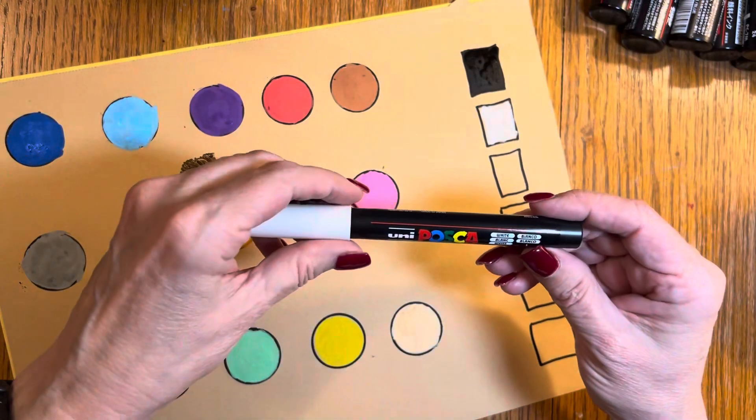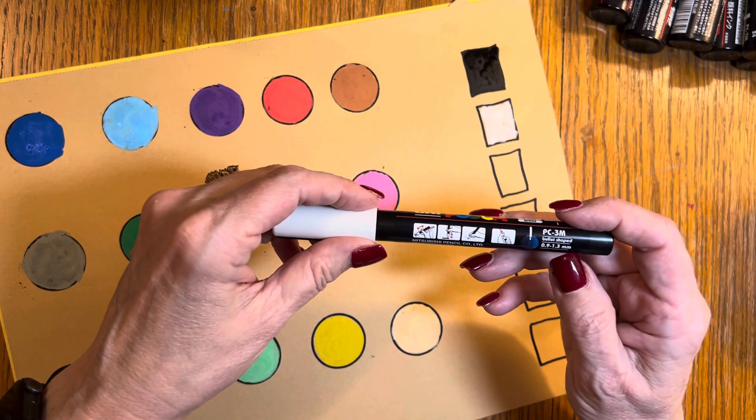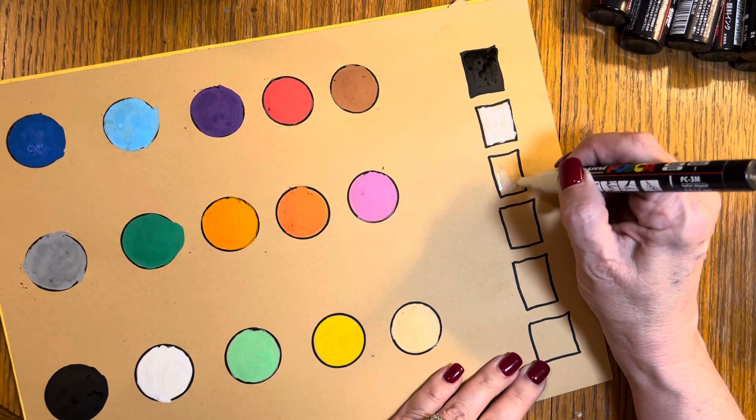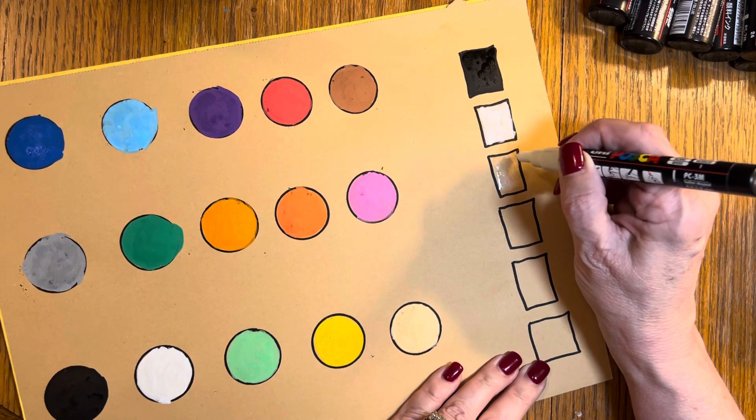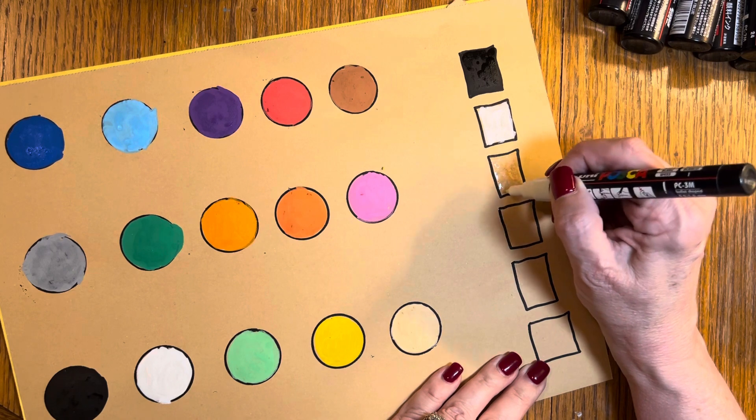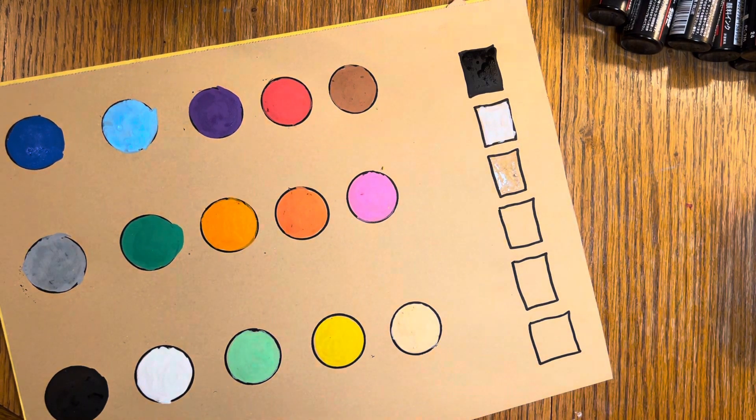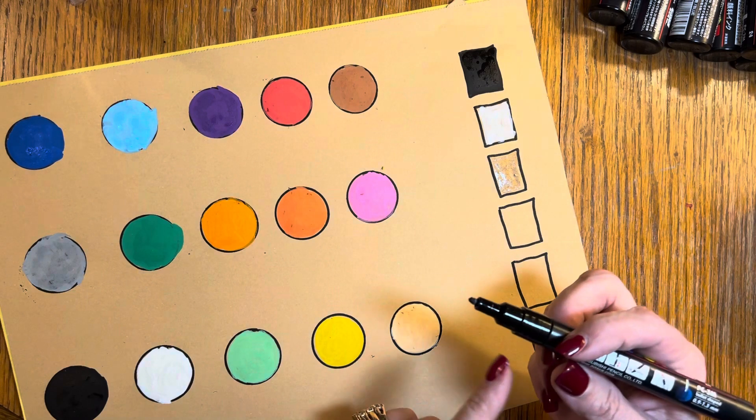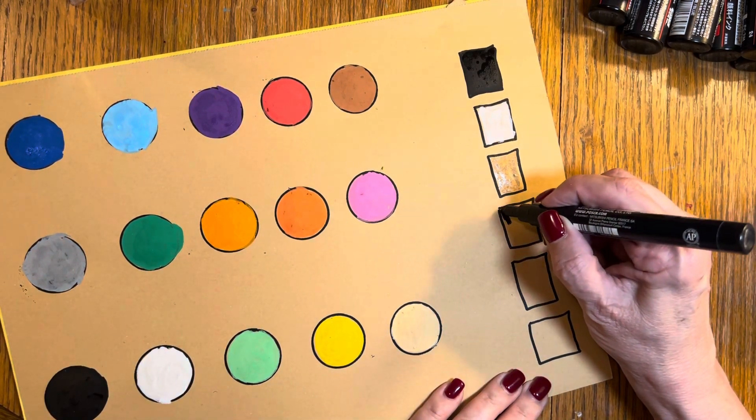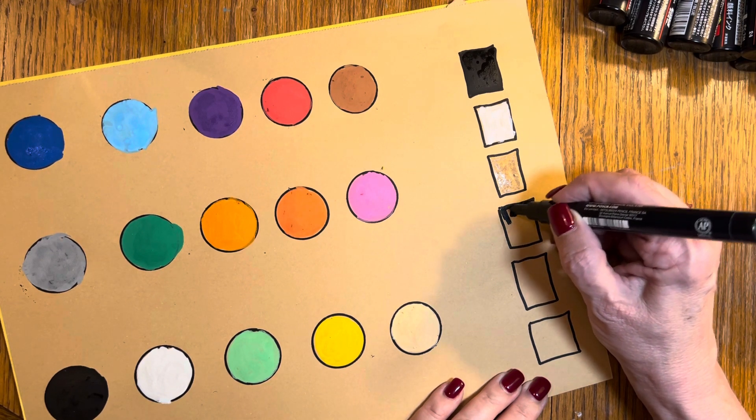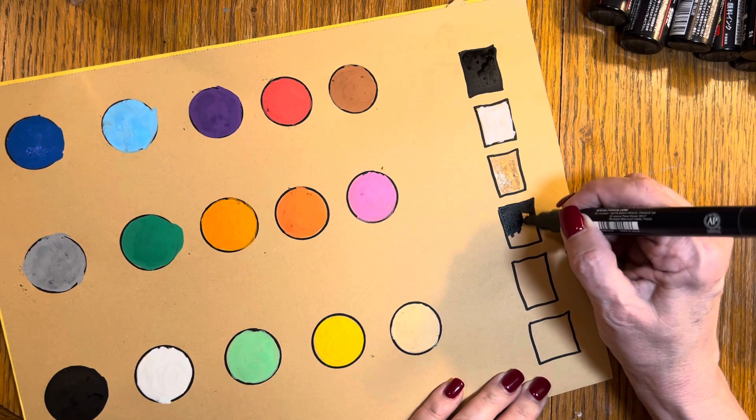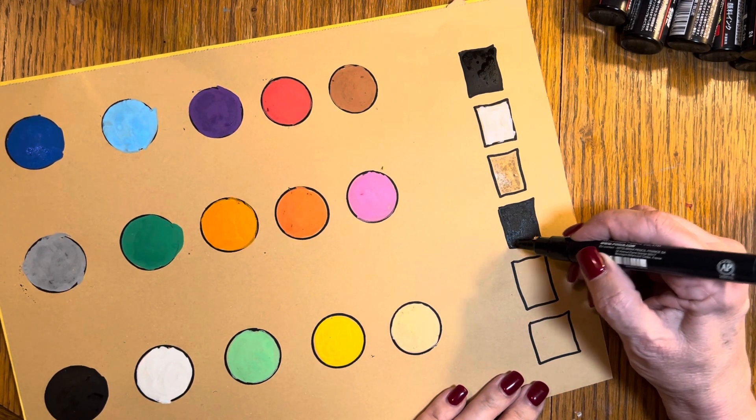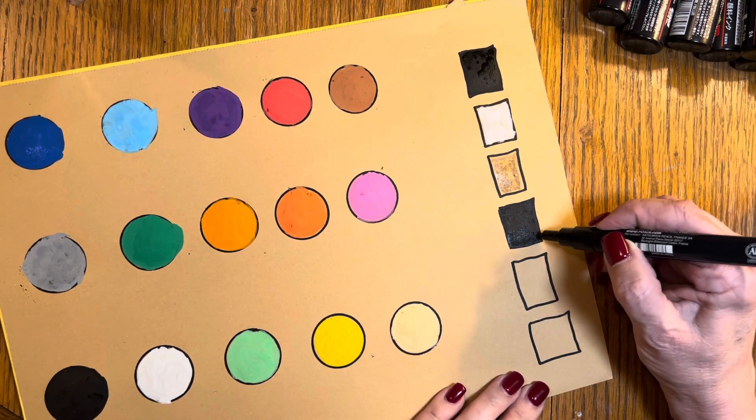And then we have a white one, this is a 1.3 millimeter, a 3 white. White didn't come out quite as good as I'd hoped, I don't know what the deal is with that one. And then we have a black fine bullet tip, see that? It's a 1.3 or a 3 millimeter. And this is the one I use to make these squares and circles.